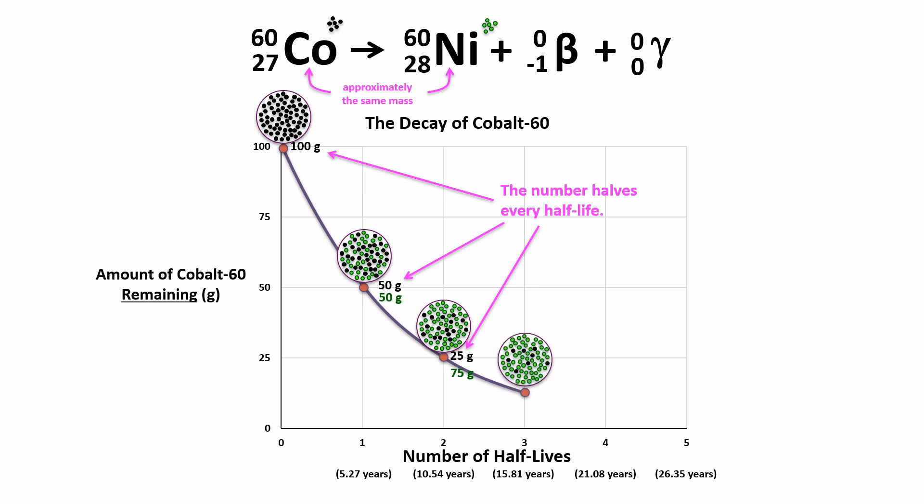half of the cobalt-60 atoms you have left will decay again, and you'll be left with only 12.5 grams of cobalt-60. Your sample will contain 12.5 grams of cobalt-60 and 87.5 grams of nickel-60.